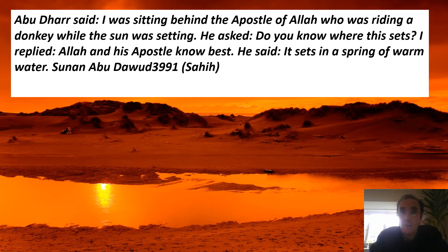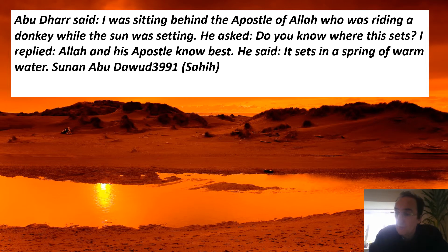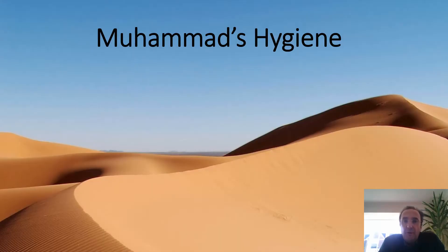A narration by Abu Dharr in Sunan Abu Darud 3991 recounts a conversation with Muhammad: "I was sitting behind the Apostle of Allah who was riding a donkey while the sun was setting. He asked, 'Do you know where the sun sets?' I replied, 'Allah and his Apostle know best.' He said, 'It sets in a spring of warm water.'" There are other narrations from Abu Dharr where Muhammad says the sun must have permission to set. Clearly, Muhammad did not understand the Earth's orbit around the sun.